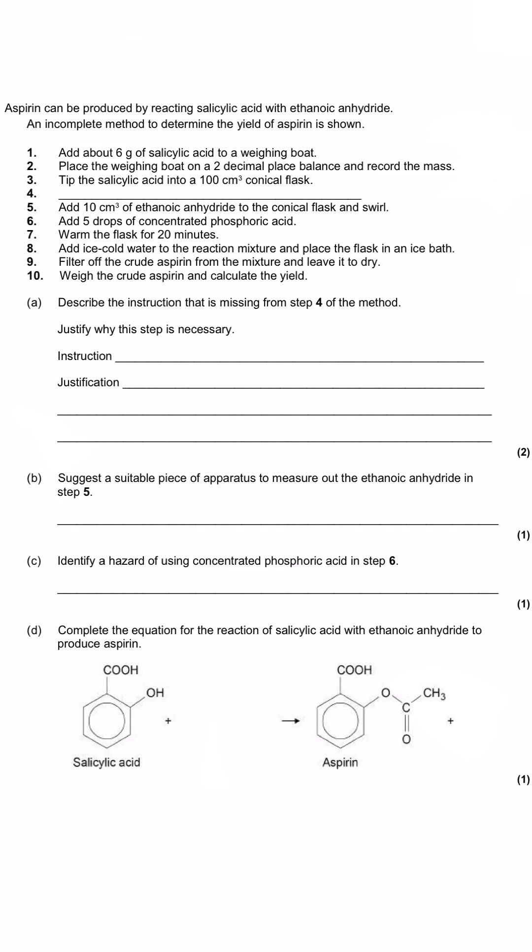In this question we are looking at the synthesis of aspirin and we're told that it can be produced by reacting salicylic acid, which is shown down here at the bottom, with ethanoic anhydride, and there is an incomplete 10-point method for how we determine the yield of aspirin produced shown in this section here. And then it says in part A, describe the instruction that is missing from step 4 of the method and then justify why this step is necessary.